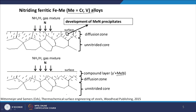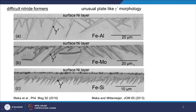Now let us look at the other class — elements which are difficult nitride formers. Something very interesting can be seen. The light optical micrographs shown are for nitrided iron-aluminium, iron-molybdenum, and iron-silicon alloys. From the surface, iron nitrides are not growing as a layer; instead they grow as needles or plates into the matrix. This plate-like growth is seen for molybdenum and silicon as well — a very drastic difference in the way iron nitride grows during nitriding.